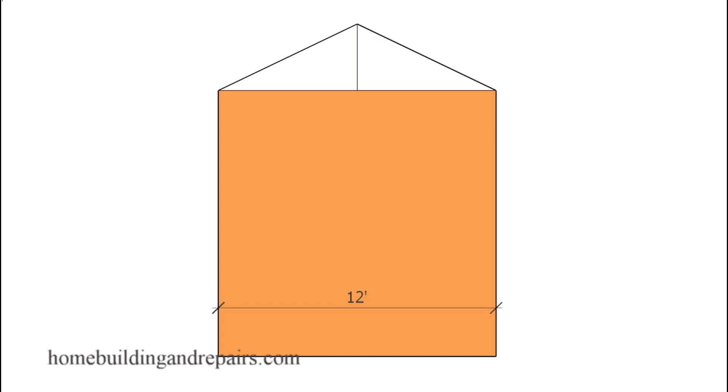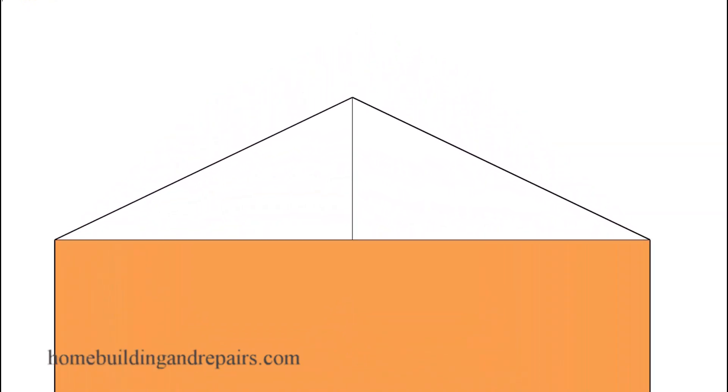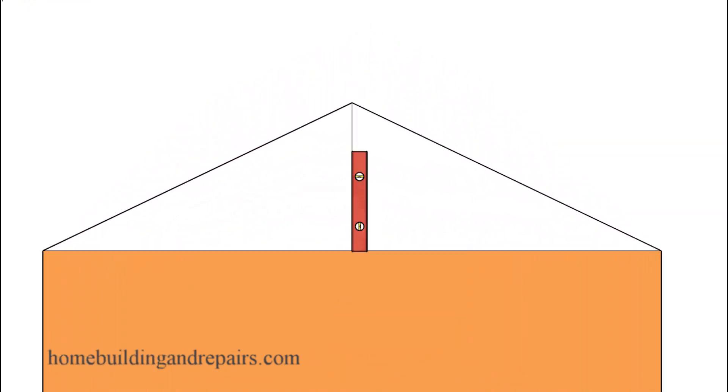Instead of the odd angles you usually get if you use a 5 and 12 roof pitch or even a 6 and 12 roof pitch. And the angle for a 6 and 12 roof pitch is going to be 26.6 degrees, or if we want to take it one more decimal, it's going to be 26.565 degrees. So almost right in between 26 and 27 degrees.